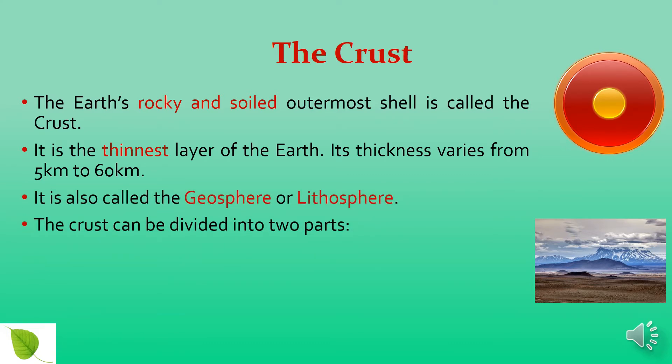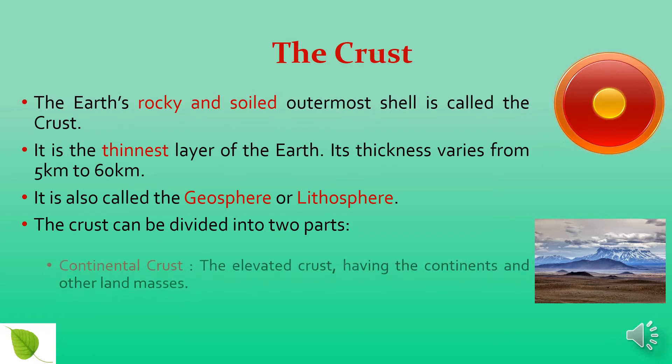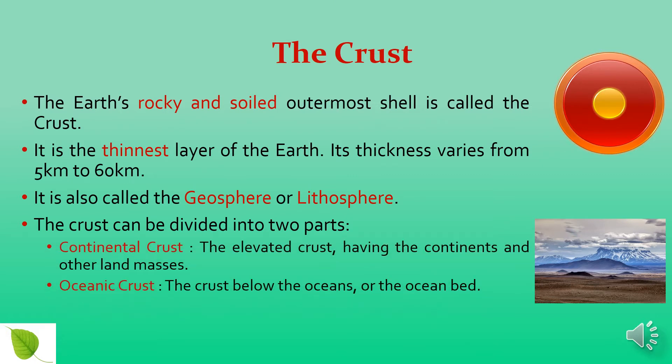The crust can be divided into two parts: continental and oceanic. Continental crust is the elevated crust having the continents and other landmasses. Oceanic crust is the crust below the oceans, or the ocean bed.